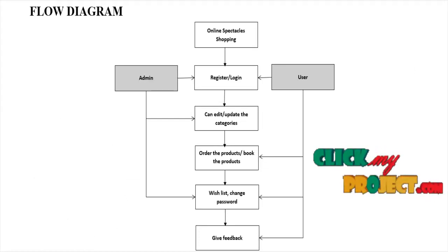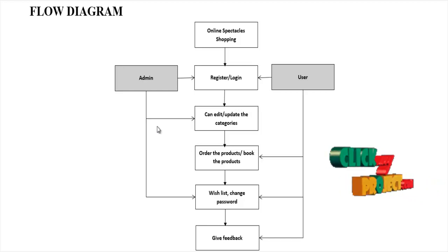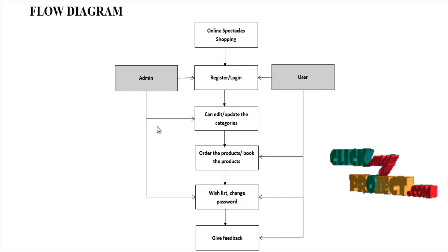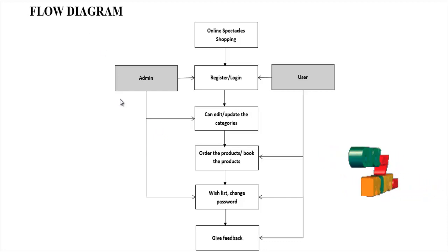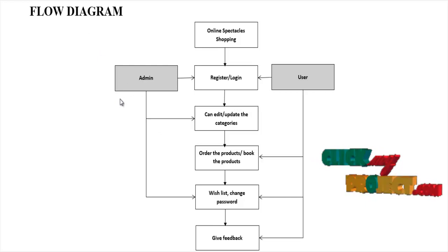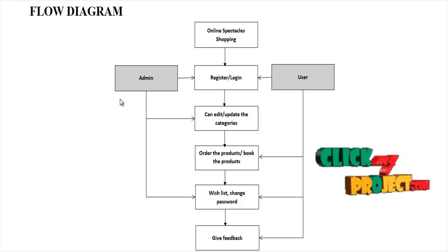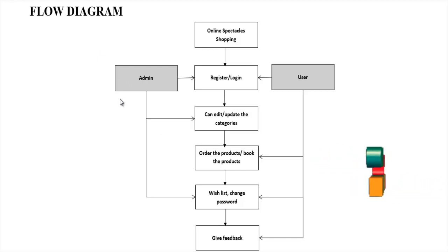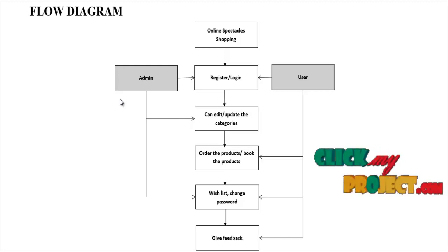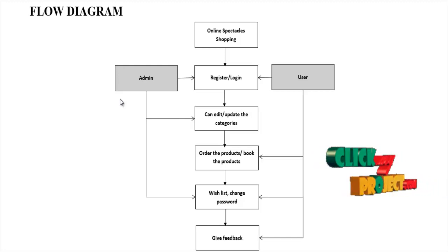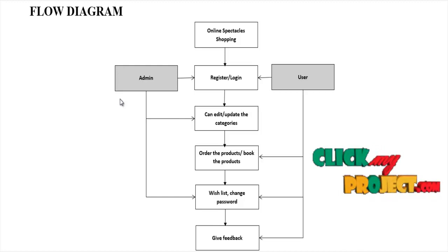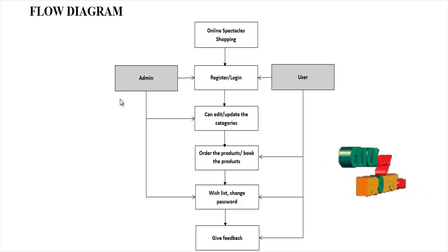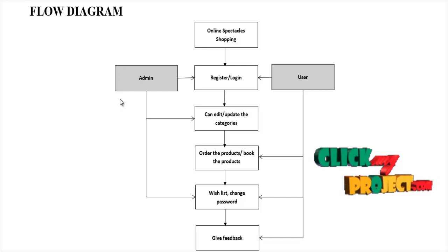Now we are going to see the flow of our process. The system has an admin page and a user page. The admin page contains all registered user details, wishlist, add products, remove products, and inbox. The user page contains options to place orders, add to cart, enter feedback, and so on.